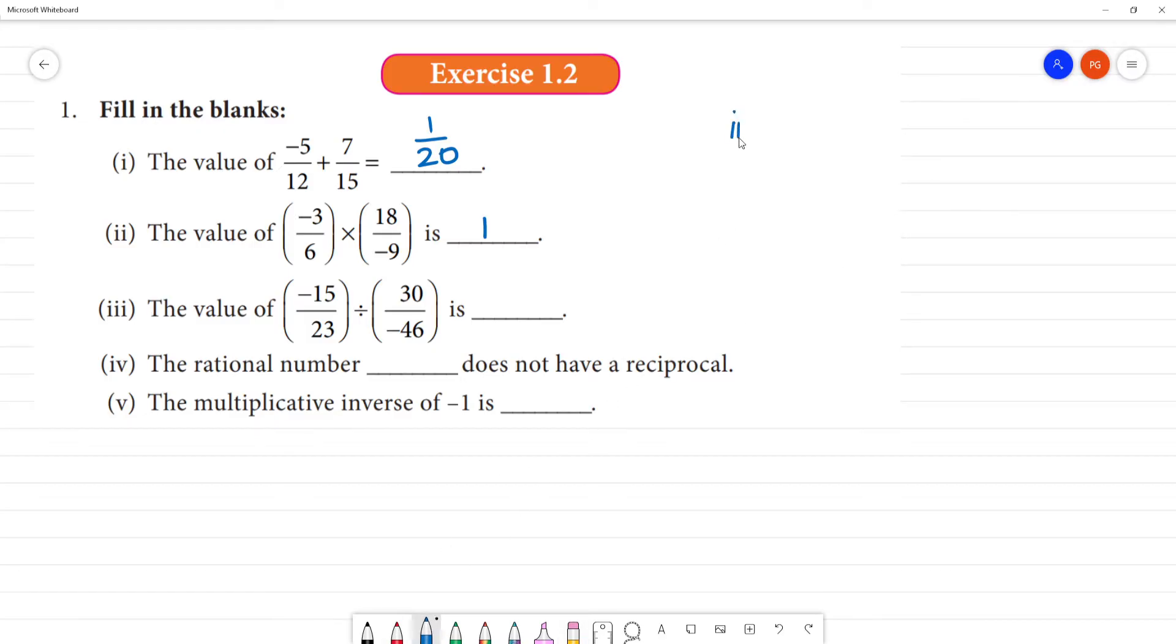Third one. The value of minus 15 by 23 division, divided by 30 by minus 46. Here, minus 15 by 23. Division changes to multiplication symbol and we change the reciprocals. We change the sign, plus-minus becomes minus-plus. Now we will get minus into minus, we will get plus sign.